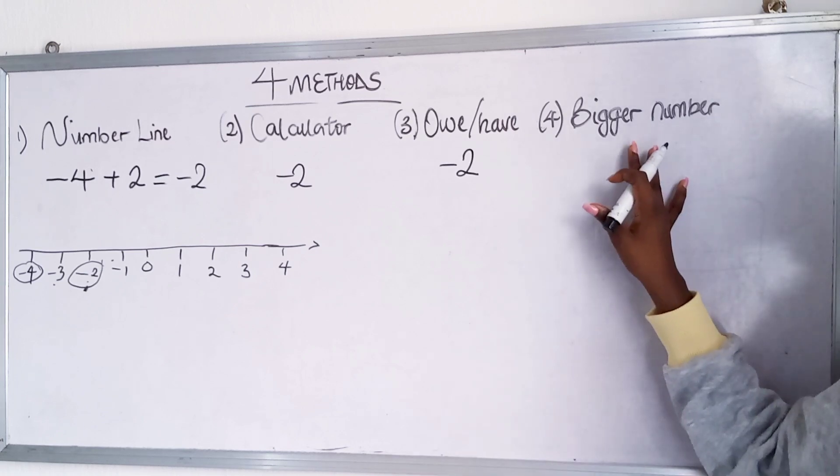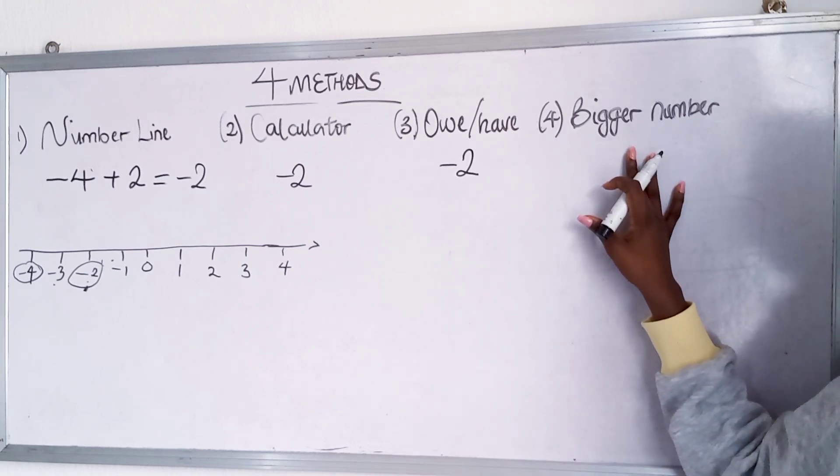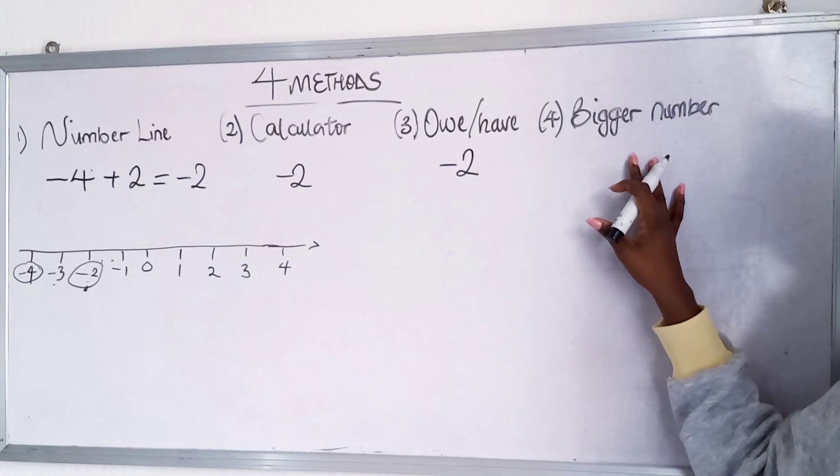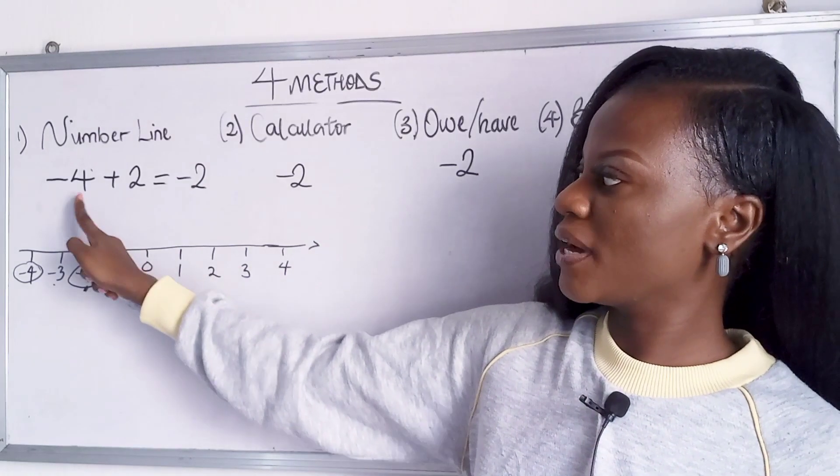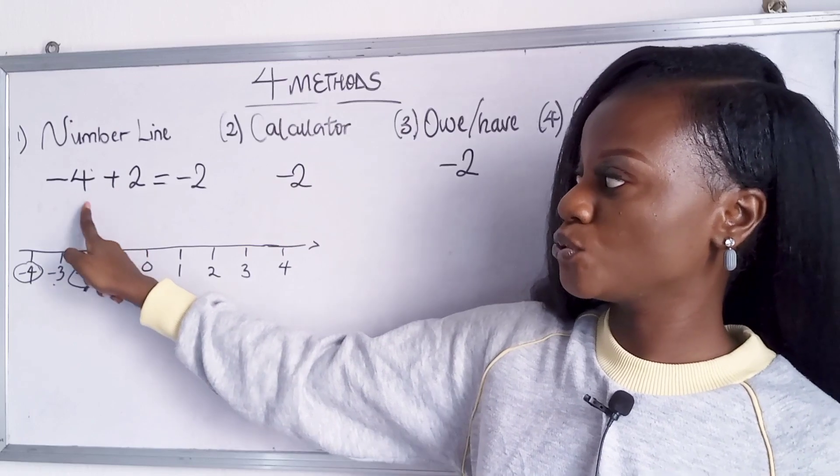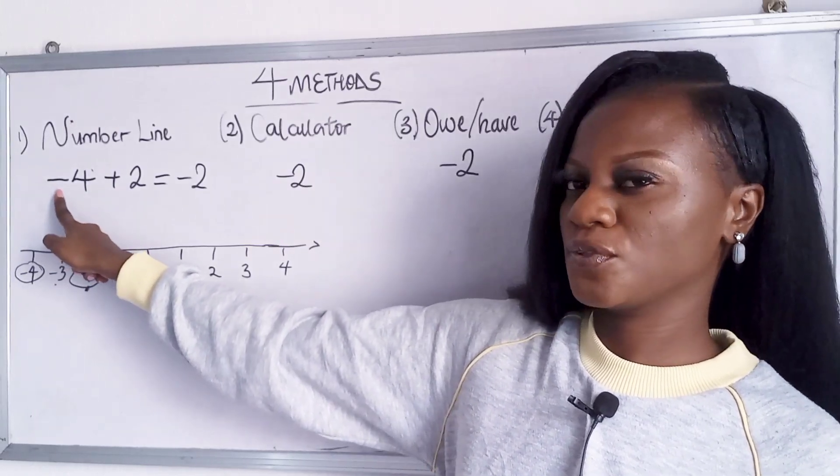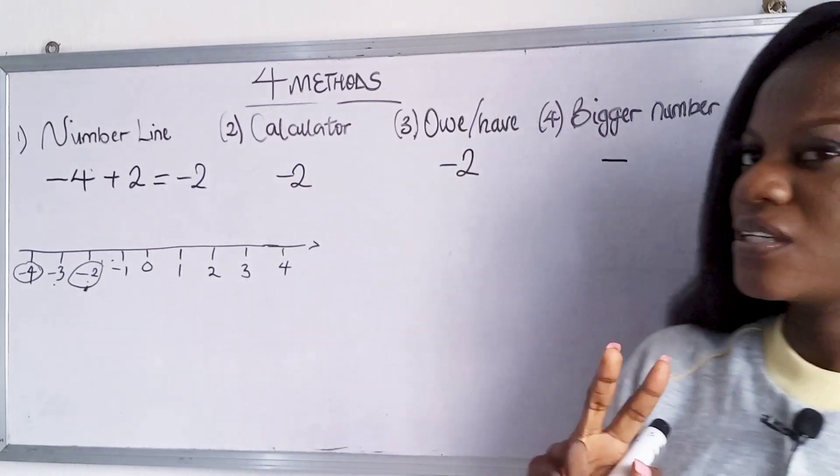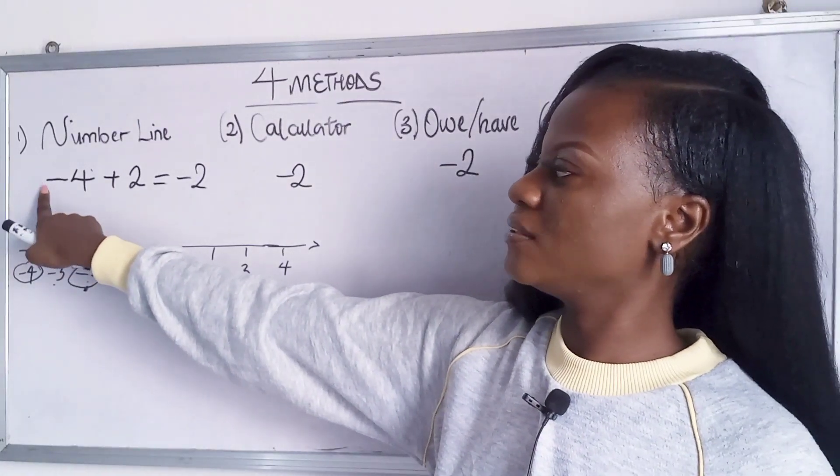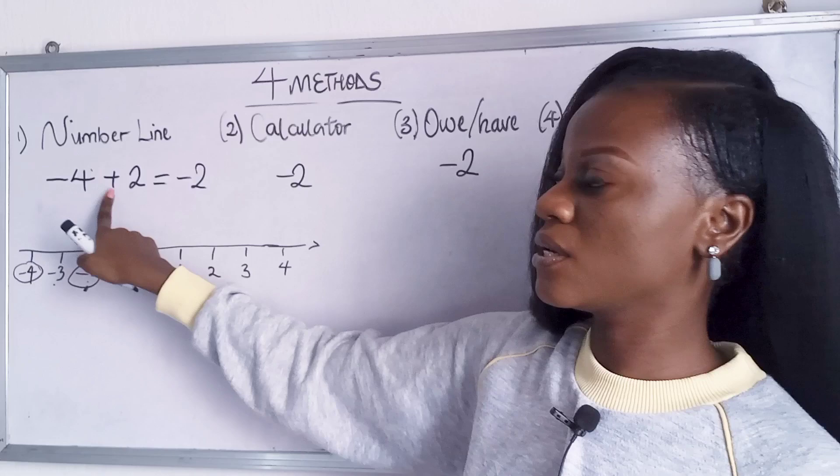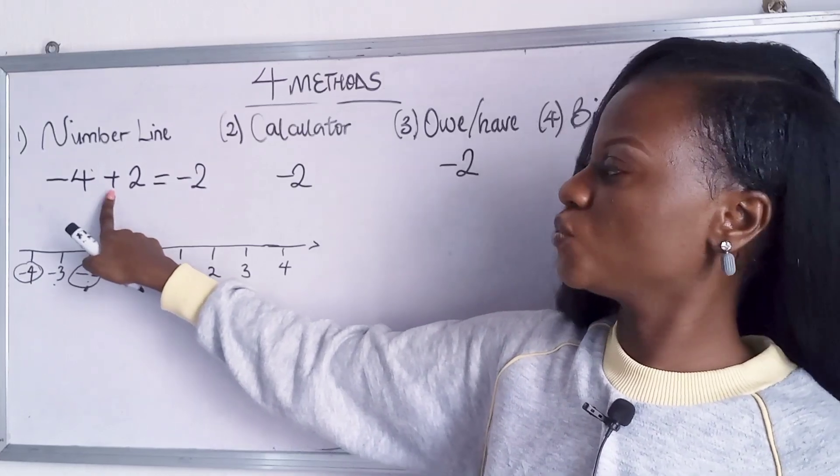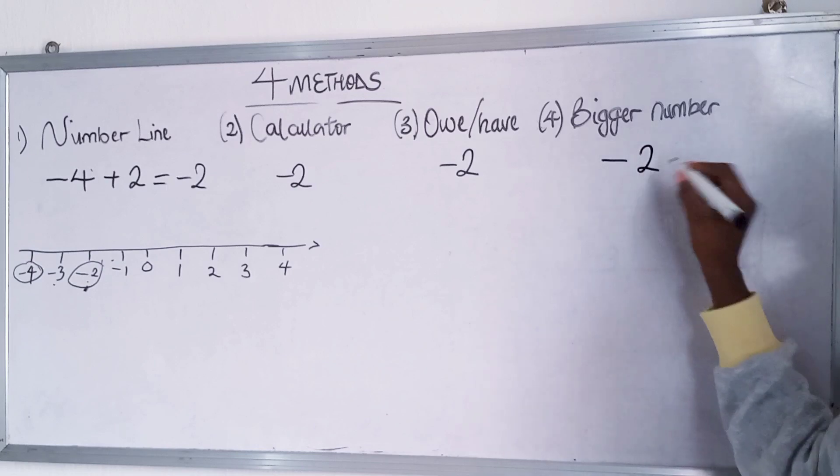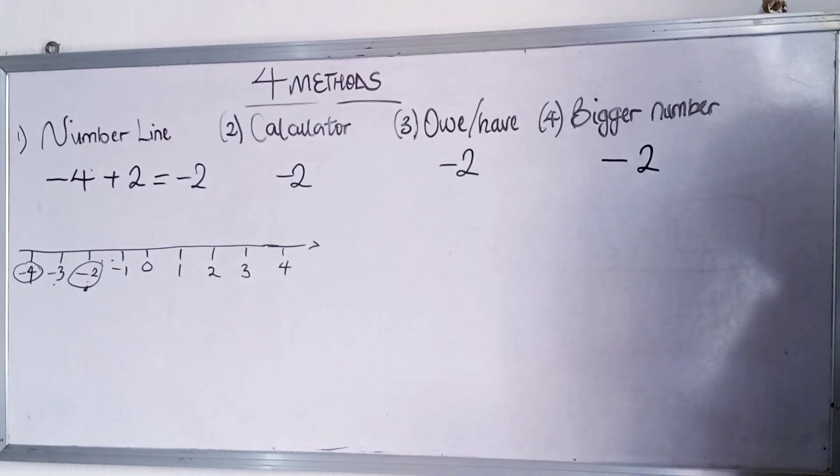All right now for the bigger number method, this might be my favorite. So for the bigger number method you have to check which number is bigger. Is it four or two? Now what's the sign in front of the bigger number? Minus. Right? Okay now the second thing to do is multiply the two signs. Minus times plus is what? Minus. That means we're going to subtract these two numbers.